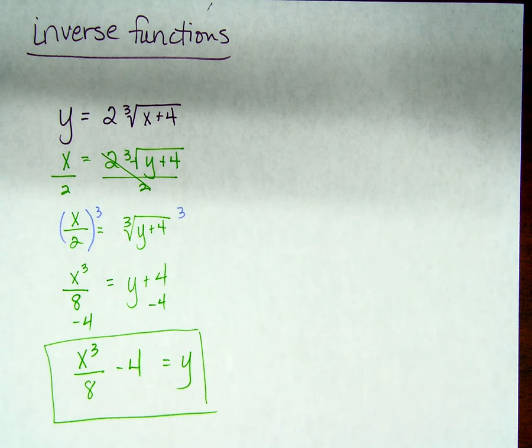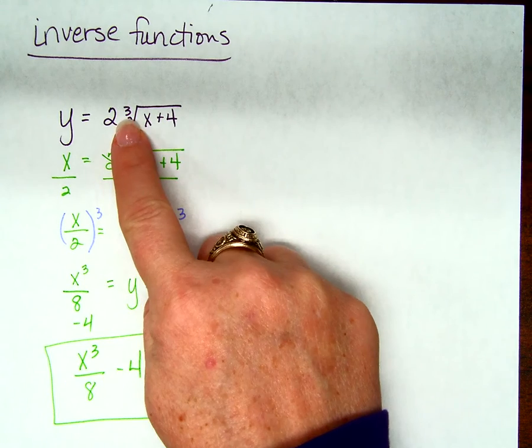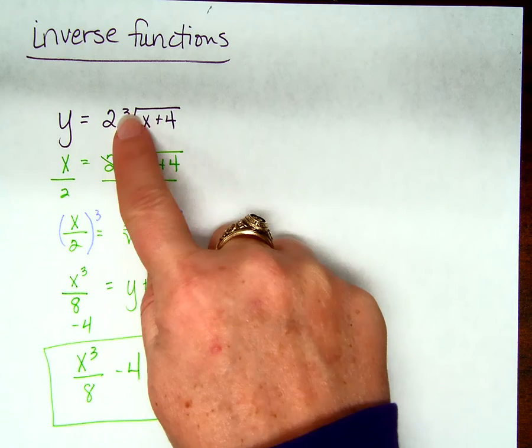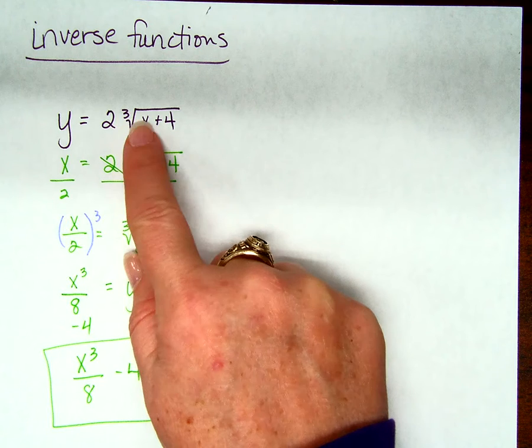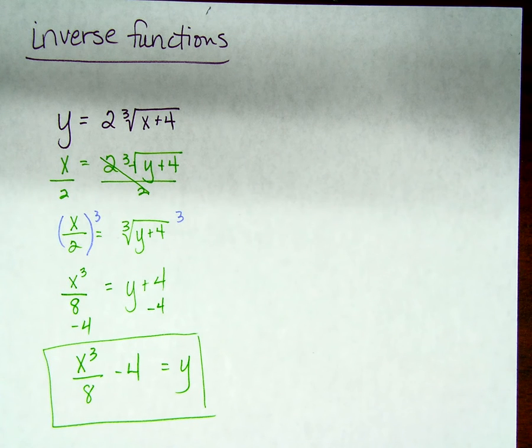What about fourth roots? Do you think they have an inverse? What would that be? If a cube root has an inverse of to the 3rd power and a square root has an inverse to the 2nd power, what is a fourth root going to have an inverse of? Yeah, to the 4th power. Does that make sense? Does it seem logical? Yeah, okay, good.